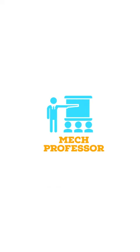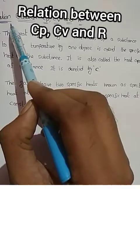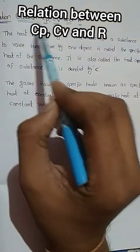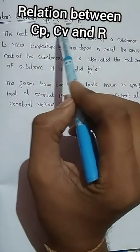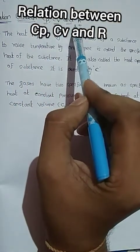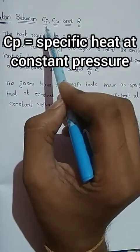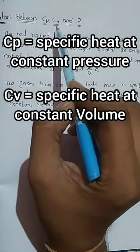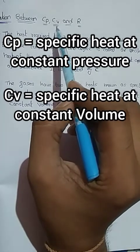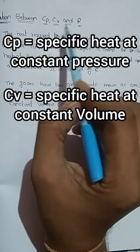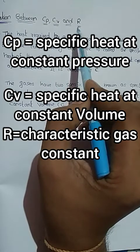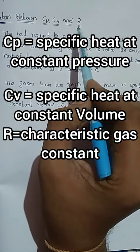Hi guys, welcome to our channel Mac Professor. In this video we are discussing the relation between Cp, Cv, and R. Here Cp is the specific heat at constant pressure, Cv is the specific heat at constant volume, and R is the characteristic gas constant.